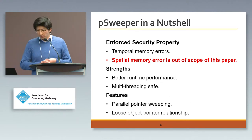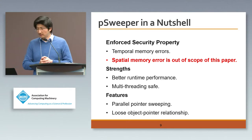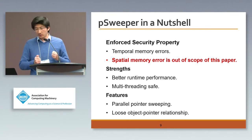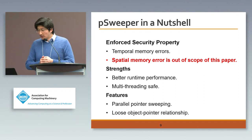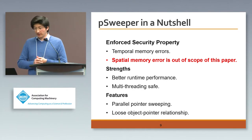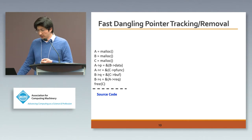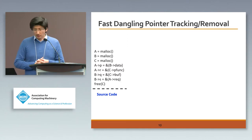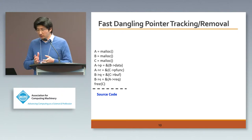Before showing the details of our approach, we present our threat model. We are trying to defeat use-after-free attacks; we are not solving buffer overflows — that is out of the scope of this paper. Our strength is better runtime performance, and it is also safe for multi-threading programs. We use parallel pointer sweeping and maintain a loose object-pointer relationship.